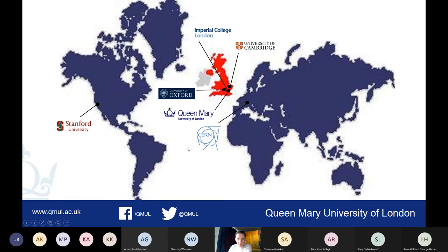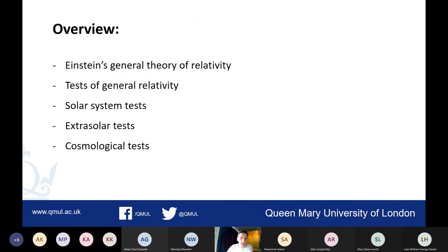Returning to the subject of the talk, this is a brief overview of the things we're going to cover. I'll start by explaining Einstein's general theory of relativity, before talking about how we can test it. I'm going to talk about various different types of tests in different environments - tests within the solar system, extrasolar tests meaning outside of the solar system, and cosmological tests involving the behavior of the universe on the largest scales that exist.